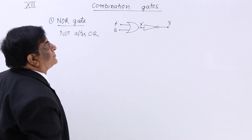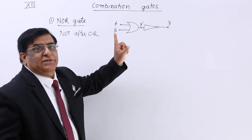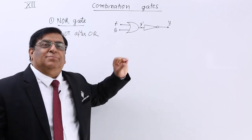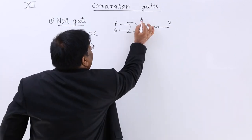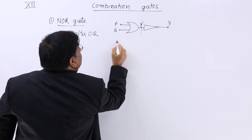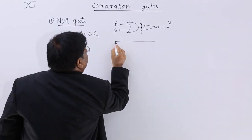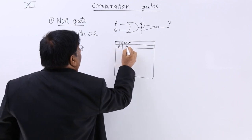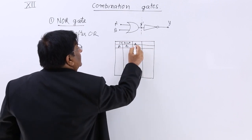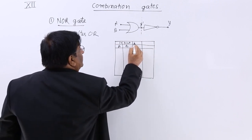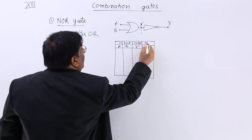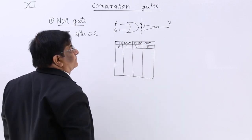Now what should be the truth table for this? We will not only study the truth table, but also study how we made it with help of previous knowledge. So we divide it into two parts — the basic OR gate part and the basic NOT gate part. This gives us a truth table with inputs A and B, an intermittent output Y dash, and a final output Y.